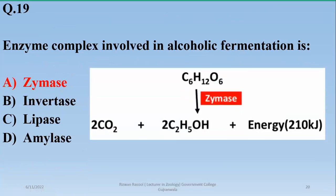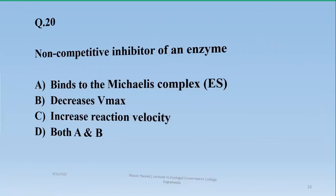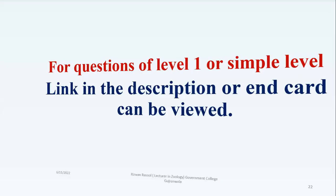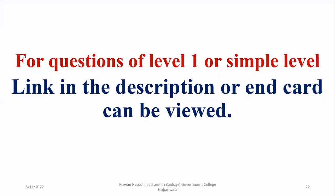Number twenty: a non-competitive inhibitor of an enzyme binds to the enzyme-substrate complex (ES complex) at a site other than the active site and decreases the maximum velocity (Vmax). These are simple, direct-statement questions at a basic level.